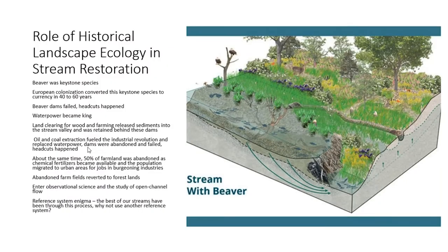Before Europeans showed up in North America, beaver was a keystone species. They were everywhere in North America — with very few exceptions, a little bit in the Southwest — but pretty much everywhere up to the Arctic Circle. They had dams at a density of one beaver family per 150 acres, a very high density. The beaver is this keystone species, really important to the drainage network in North America.